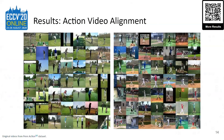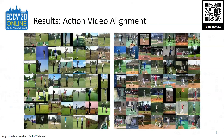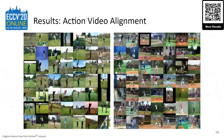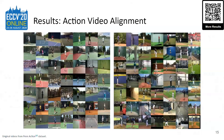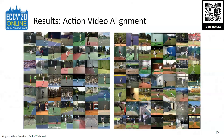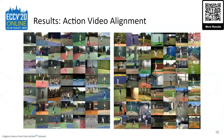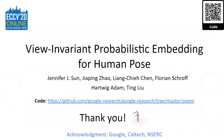Here we see the results of our embedding model with no training on the target dataset, aligning videos of the same action in different views. Here are our additional results. We release our code for research at the provided link, and the QR code is shown in the top right corner. Thank you.